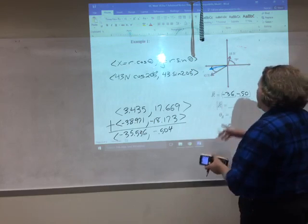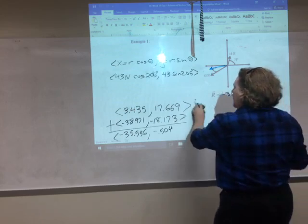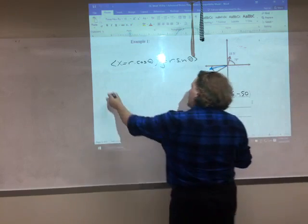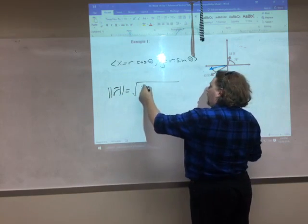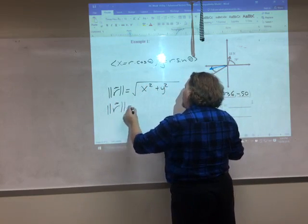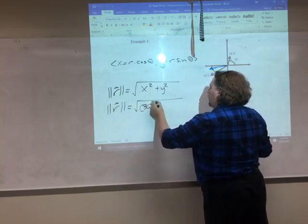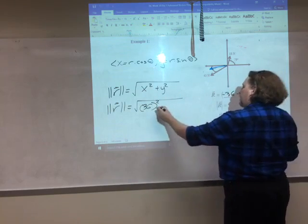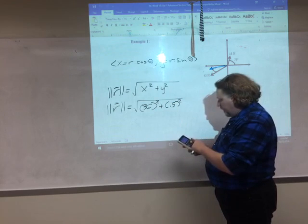Now what else do I need to do? I need to find the magnitude of that vector. And I want to find the direction angle of that vector. First magnitude. Remember, that's just the Pythagorean theorem. Square root of X squared plus Y squared. So the magnitude is the square root of negative 36 squared. Now I'm not bothering to write negative because I know when I square it, the negative is going to go away anyway. Plus negative 0.5 squared. Again, I'm not writing the negative because I know when I square it, that's going to go away anyway.